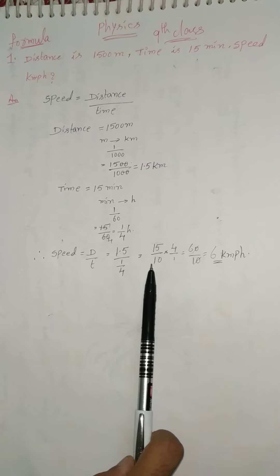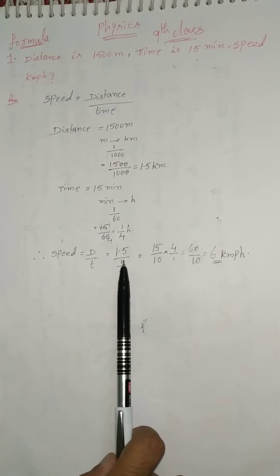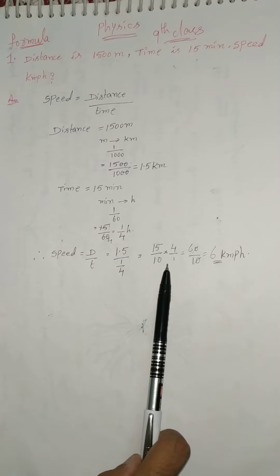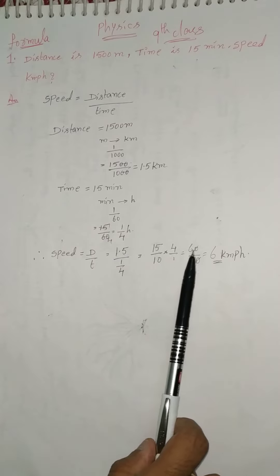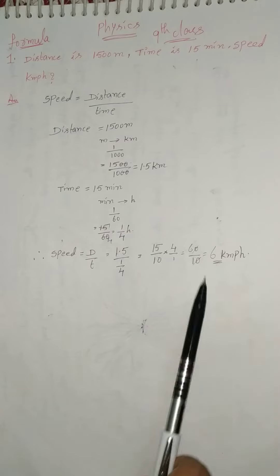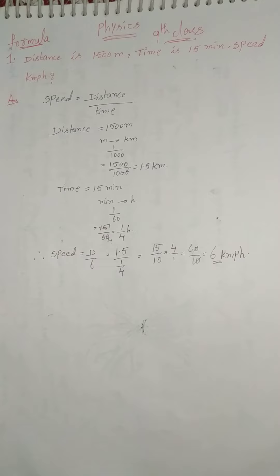So 15 fours are 60 by 10, so zero zero cancel, 6 kmph. So this is the simple trick of the problems in the physics 9th class motion in one dimension chapter.